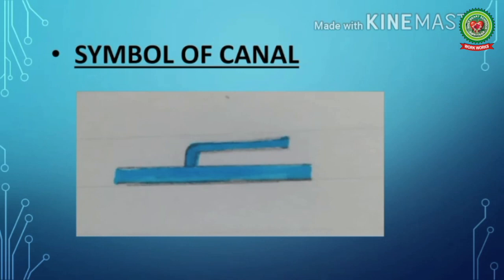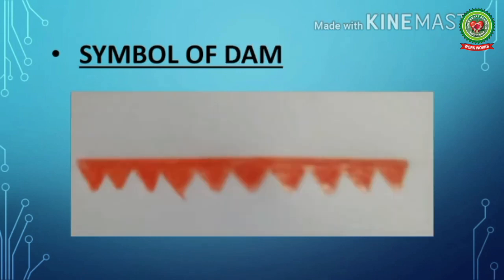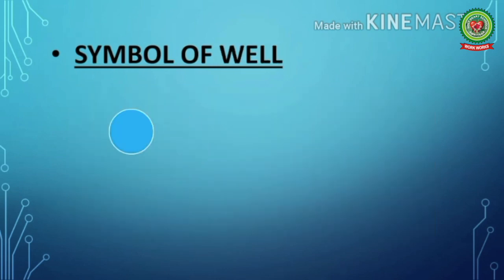Another important conventional symbol is canal. Canal means a manmade water channel, and it is shown with a blue color symbol. Next is dam — a manmade structure built across a river to control the overflow of water — shown with a red color symbol.